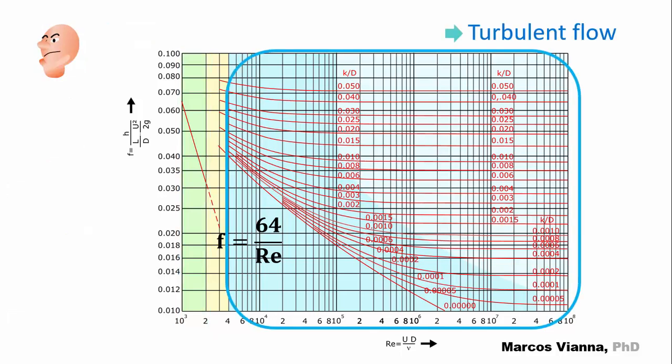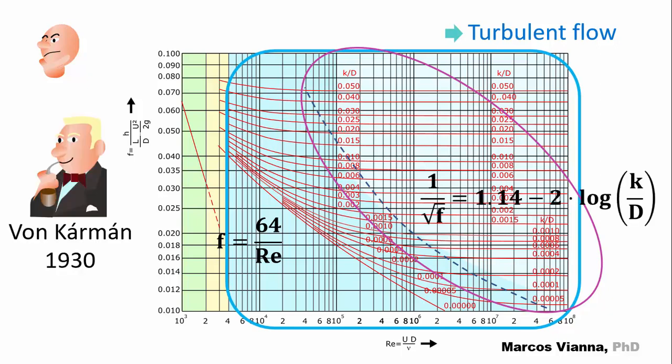But it wasn't so easy if the flow was turbulent. In this figure, you can see a dashed line that splits the area in two parts. In this one, we say that complete turbulence occurs. The Reynolds number is no longer important to define the f value. Only the k over D relationship matters. For this area, and based on data from Nikuradse, Mr. Theodor von Kármán has established this formula.